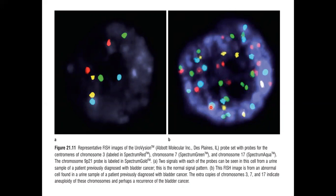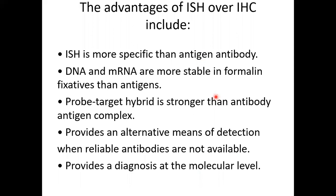Regarding the advantages of in situ hybridization over immunohistochemistry: ISH is more specific than IHC; DNA and messenger RNA are more stable in formalin-fixed tissue than antigens; and the probe-target hybrid bond — the binding between the probe and the target sequence — is stronger than the antibody-antigen bond.